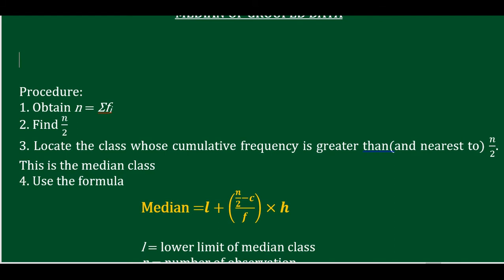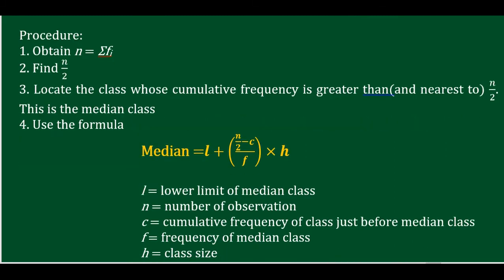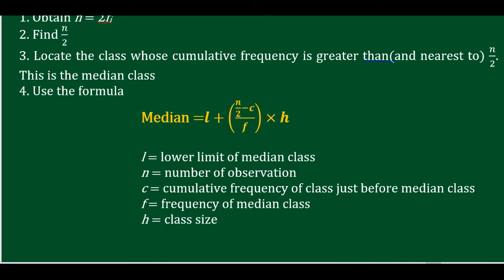C is the cumulative frequency before the median class. F is the frequency of the median class. H is the class size — for example, 0 to 10, so H is 10.